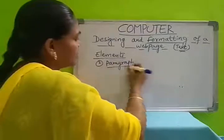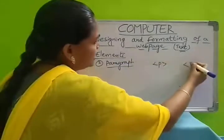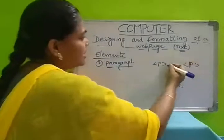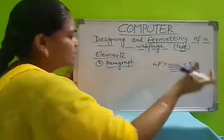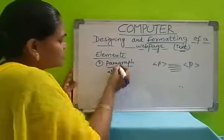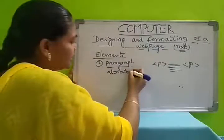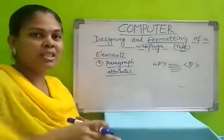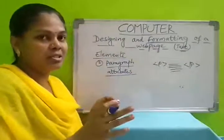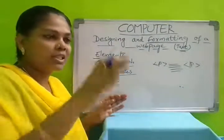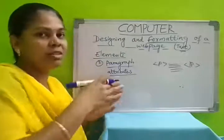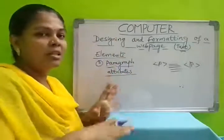The second element is paragraph. You can write your text paragraph-wise using the P tag. You can use capital or small letters. In the middle you can write any sentences or words. For this paragraph we have different attributes. So in Word also we can align the text — we can align to left side, right side, center, and justify. Same here, using the align attribute we can align the text to the left side, right side, center, or justify of the webpage.